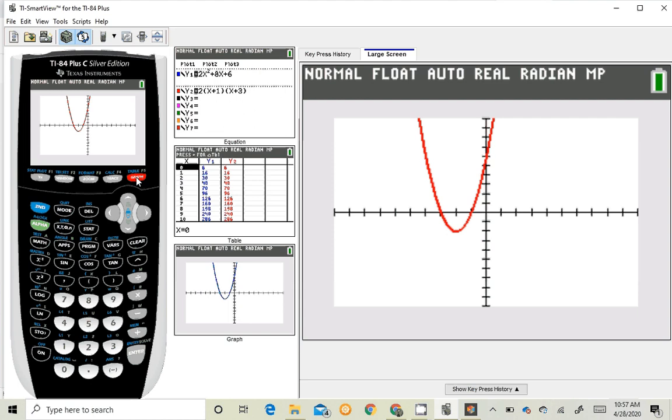So I've basically created my factored form by finding my zeros and plugging it into the factored form equation format.